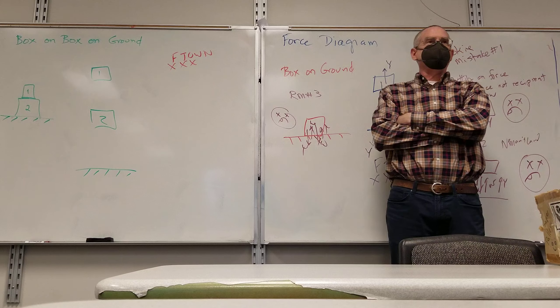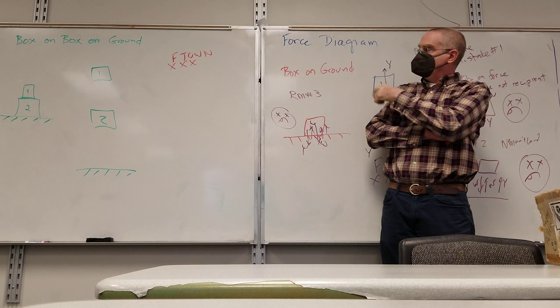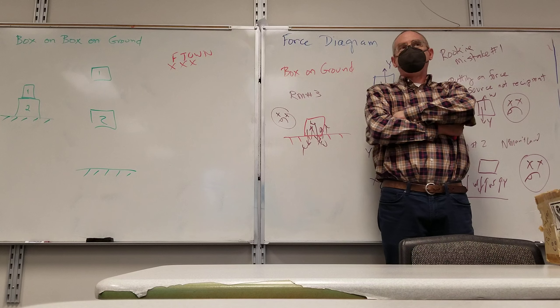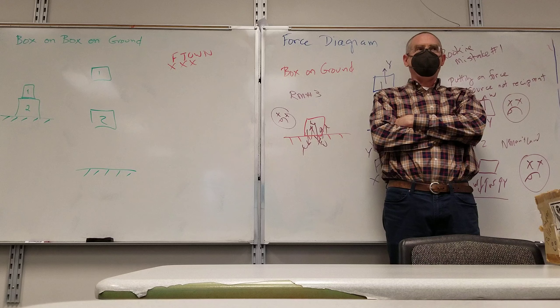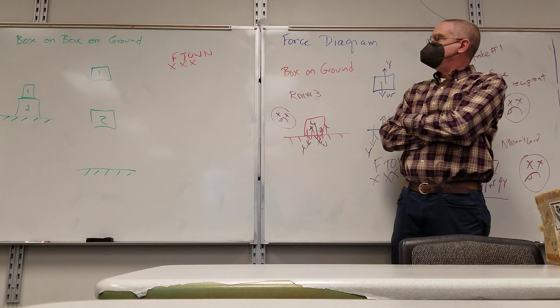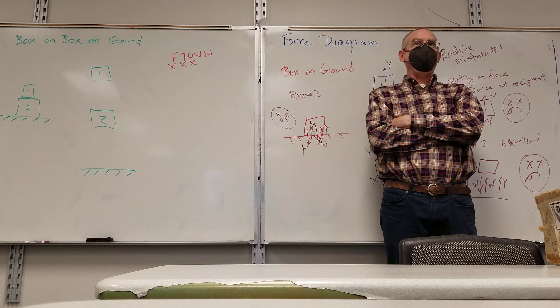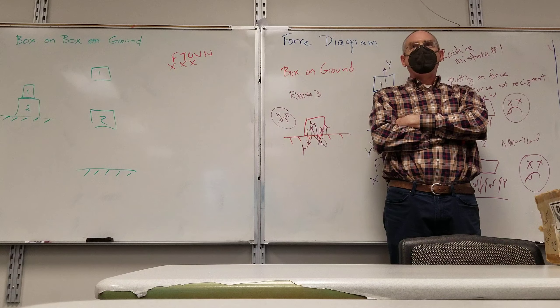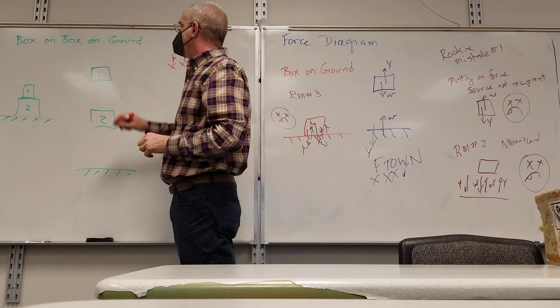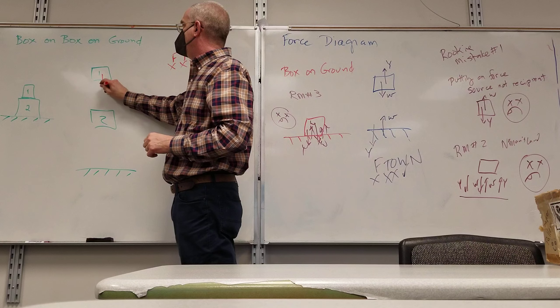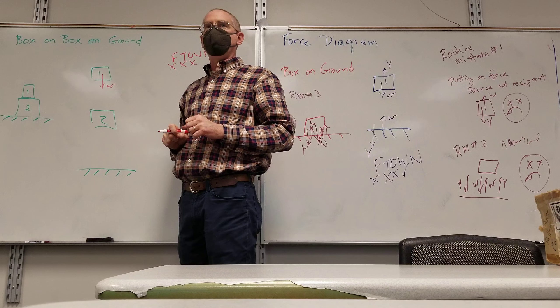Let's do weight first. Once you get used to it, weight's the simplest. Is there any weight involved? Because I got a big old planet down there. What is the direction of the weight acting on box one? Down on box one. And they come in pairs. Where's the other one?